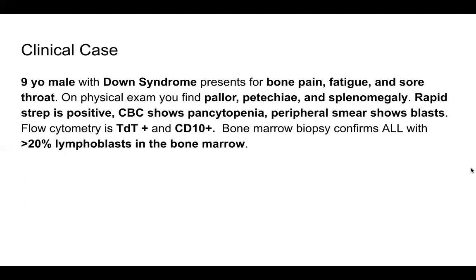Pulling out some key features: we have a nine-year-old, telling us the age range is less than a teen. Down syndrome association is present. Many of his signs and symptoms are related to his pancytopenia, including the positive rapid strep, because the blasts are crowding out the bone marrow and you're not getting those granulocytes for your immune system. The TDT positive and blasts on smear tell us this is a lymphoblastic disease. The CD10 positive leads us more toward B-ALL over T-ALL. Bone marrow biopsy is required to diagnose ALL, and that biopsy needs greater than 20% lymphoblasts.